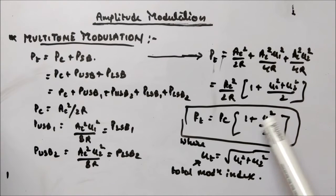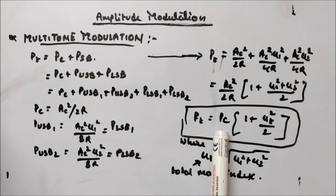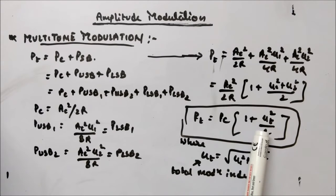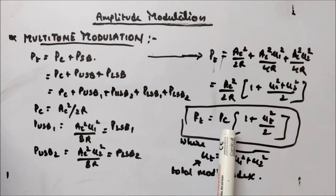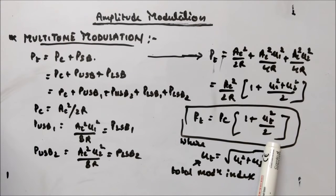Plugging in the value of muT, you will get the total power. PC remains your carrier power, and PC·muT²/2 will be your sideband power.